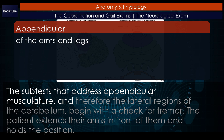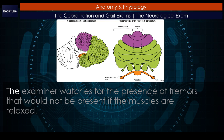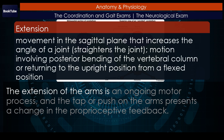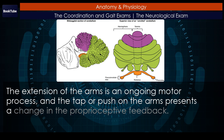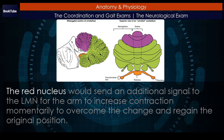The subtests that address appendicular musculature, and therefore the lateral regions of the cerebellum, begin with a check for tremor. The patient extends their arms in front of them and holds the position. The examiner watches for the presence of tremors that would not be present if the muscles are relaxed. By pushing down on the arms in this position, the examiner can check for the rebound response, which is when the arms are automatically brought back to the extended position. The extension of the arms is an ongoing motor process, and the tap or push presents a change in the proprioceptive feedback. The cerebellum compares the cerebral motor command with the proprioceptive feedback and adjusts the descending input to correct. The red nucleus would send an additional signal to the LMN for the arm to increase contraction momentarily to overcome the change and regain the original position.